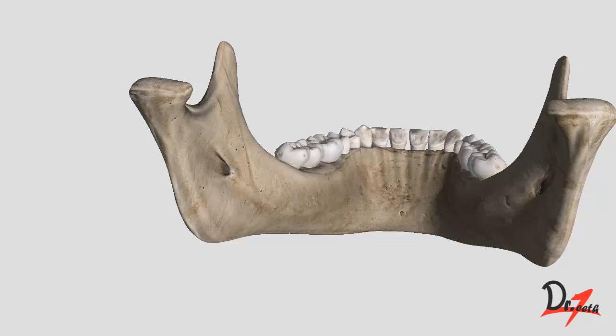On the inner surface you'll find two tubercles called the genial tubercles or mental spine: the superior genial tubercle, which gives attachment to the genioglossus muscle — a muscle of the tongue — and the inferior genial tubercle, which gives attachment to the geniohyoid muscle.